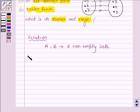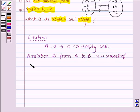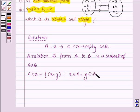Then a relation R from the non-empty set A to the non-empty set B is a subset of A cross B, that is the Cartesian product of A and B. And A cross B have all the ordered pairs (x,y) such that x belongs to A, y belongs to B.